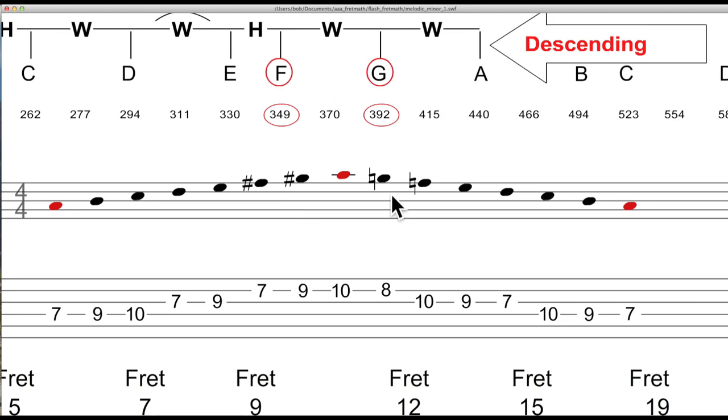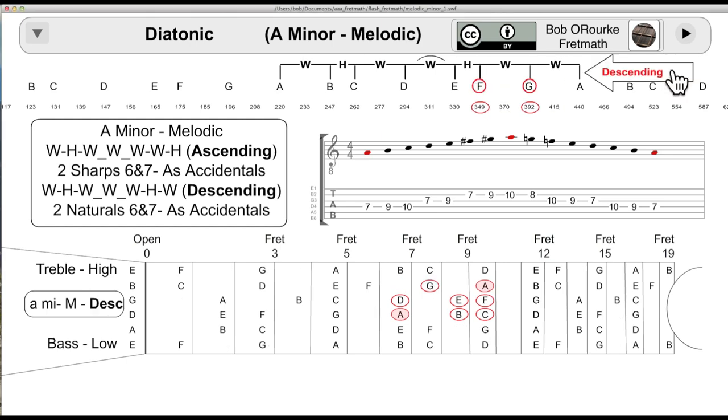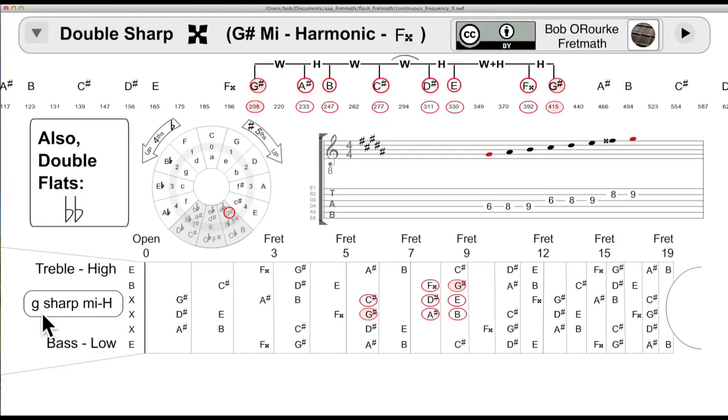The change is indicated by the accidentals, the sharps and the naturals. Down below on the fretboard you see how the notes that are relevant to the scale change whether ascending or descending.